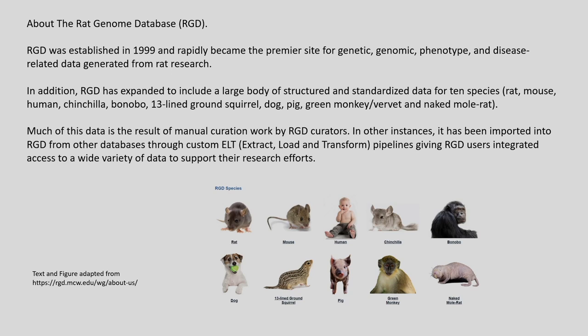Another important animal of choice is the rat. We have a Rat Genome Database accessible at rgd.mcw.edu. The RGD was established in 1999 and soon became a premier site for genetic, genomic, phenotype and disease-related data generated from rat research.